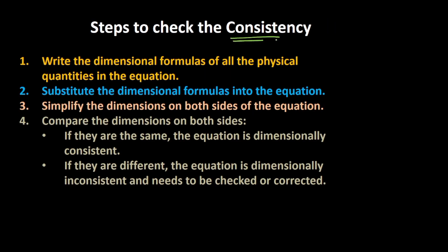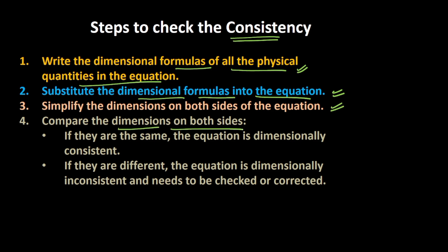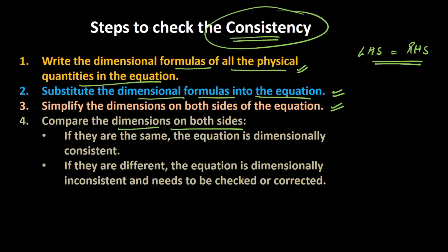In order to check the consistency of any equation, we can split the process into 4 steps. The first step is to write the dimensional formulas of all the physical quantities in the equation. The second is to substitute the dimensional formulas into the equation. The third is to simplify the dimensions on both sides of the equation. And finally, compare the dimensions on both sides. If the dimensions on the left hand side equal the dimensions on the right hand side, the equation is consistent or dimensionally correct; otherwise it is inconsistent and needs to be checked and corrected.